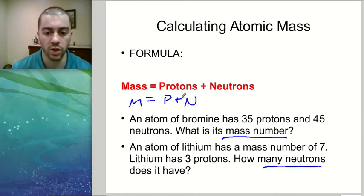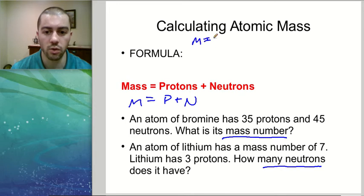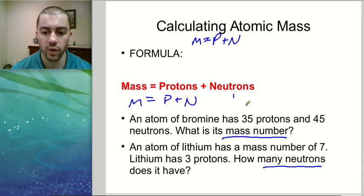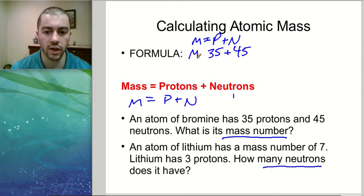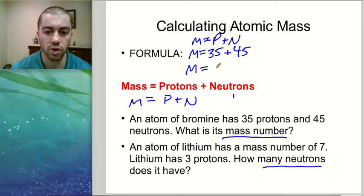For the first question, this atom of bromine has 35 protons and 45 neutrons. Using the formula mass equals protons plus neutrons, we plug in 35 for protons and 45 for neutrons and solve for mass. Since mass is already isolated, we just add the two values together, and you should end up with a mass of 80 mass units.